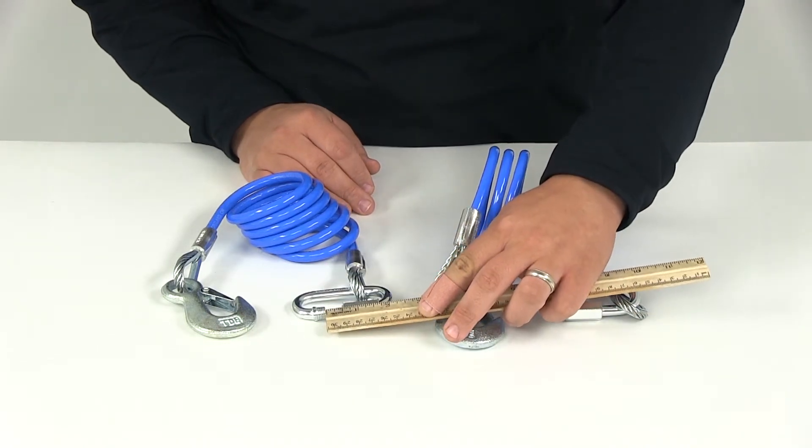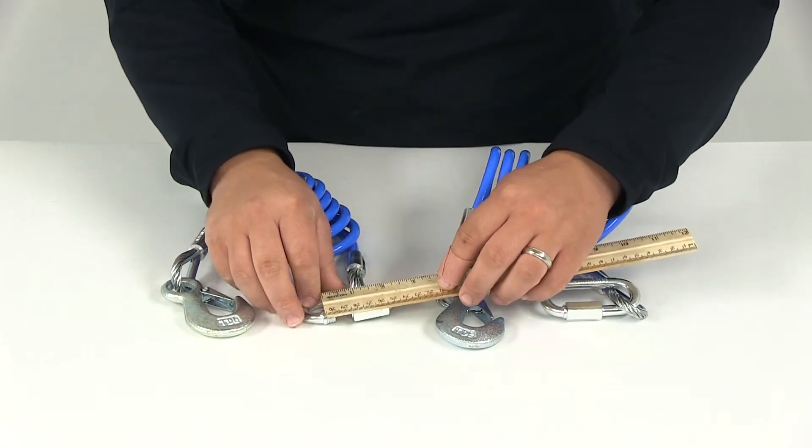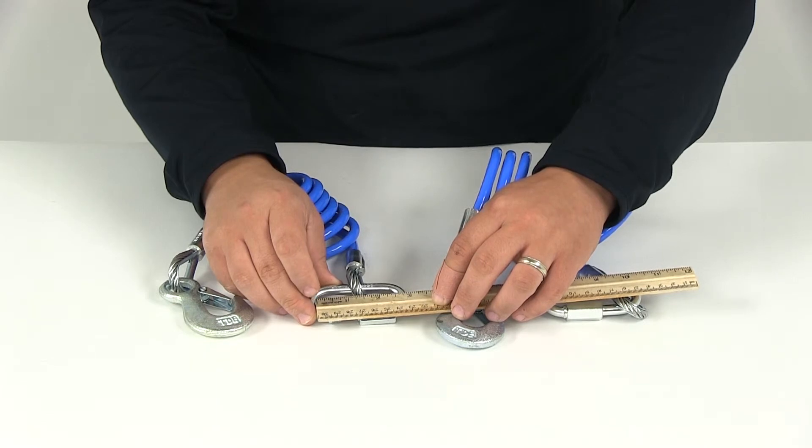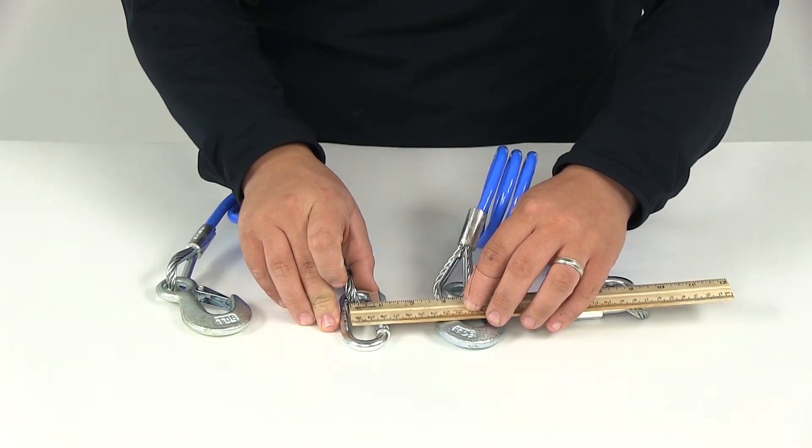The opening that this one gives us is half an inch to slip over the connection point. On the inside of that hook, the opening is 2 and 5/8 inches, and in this direction it's 5/8 of an inch.